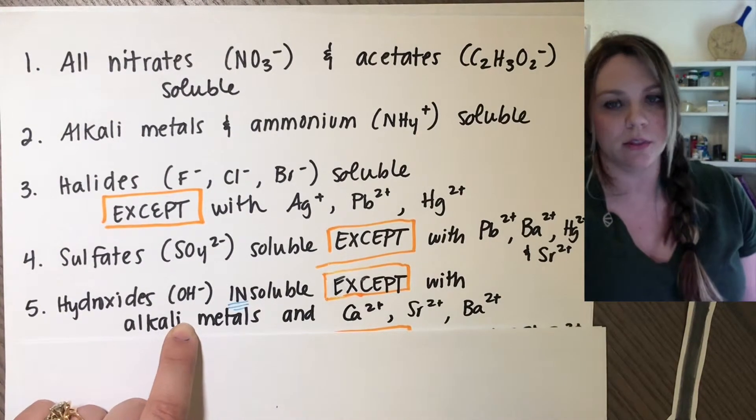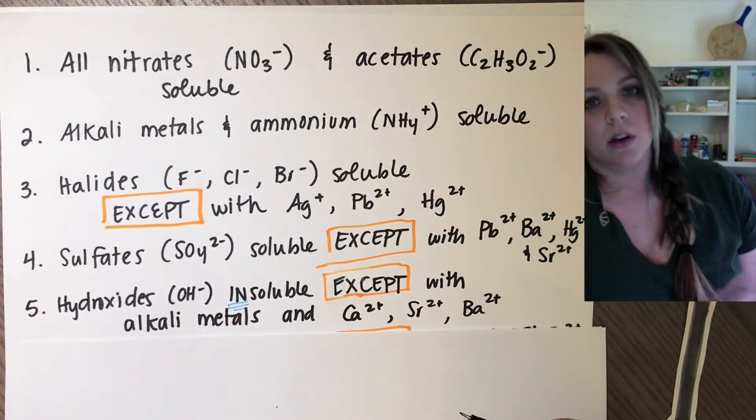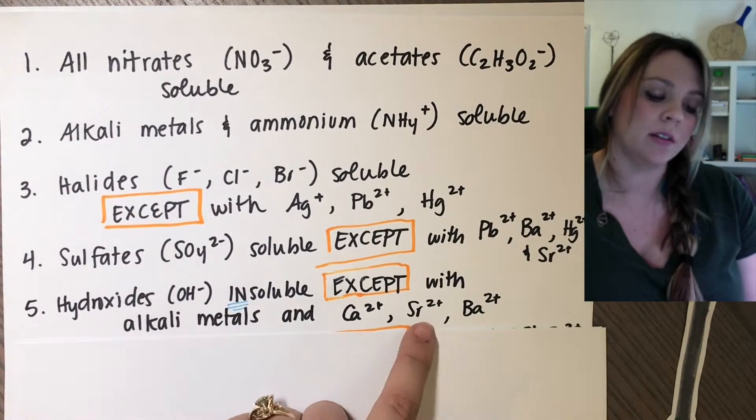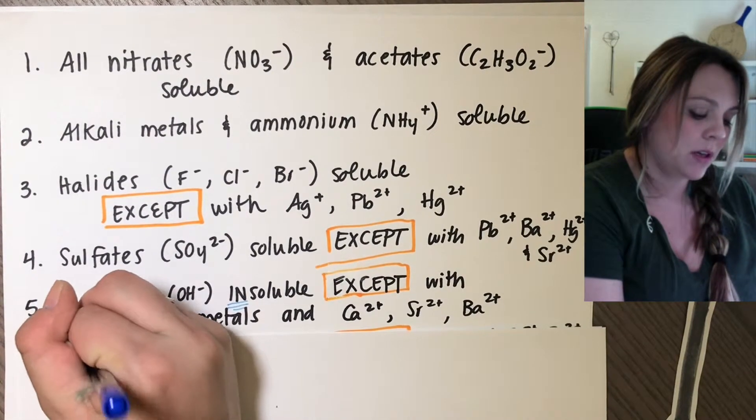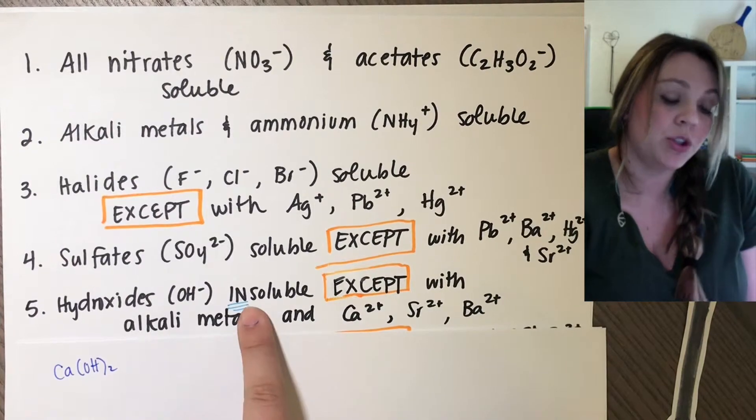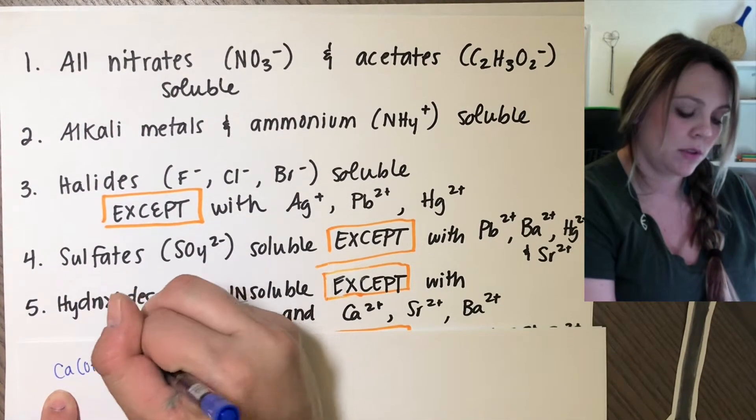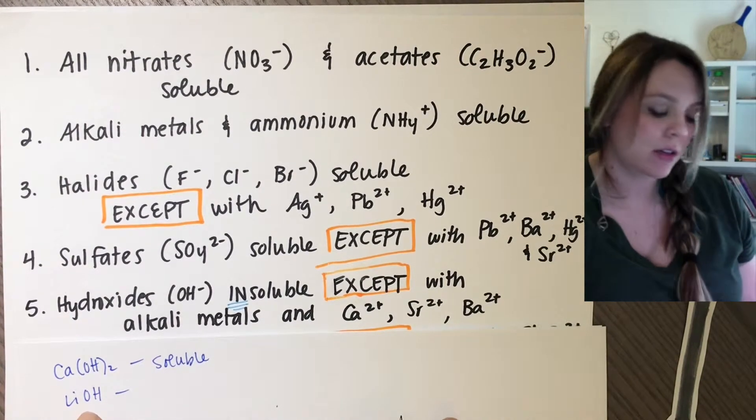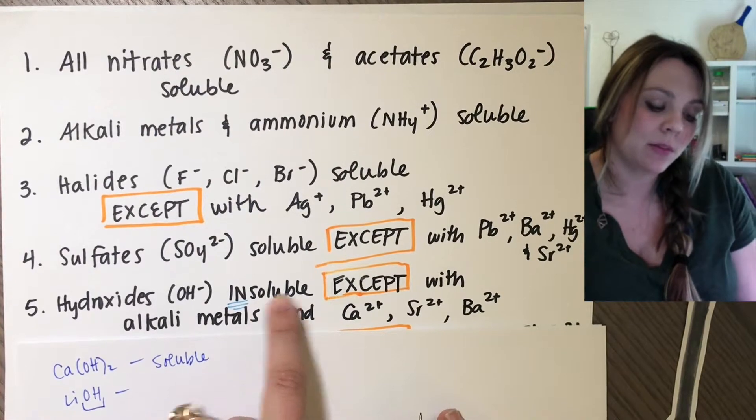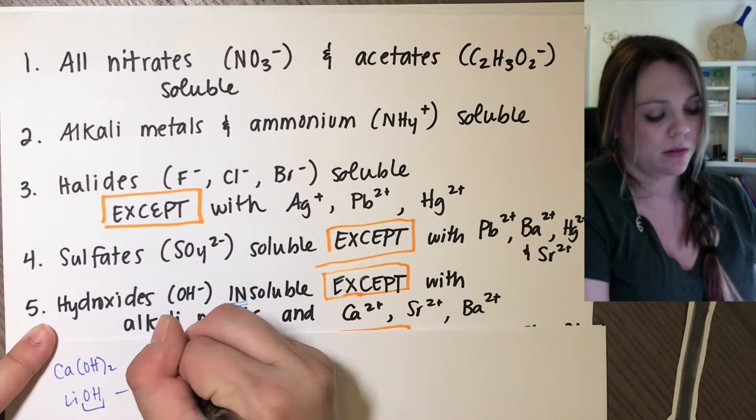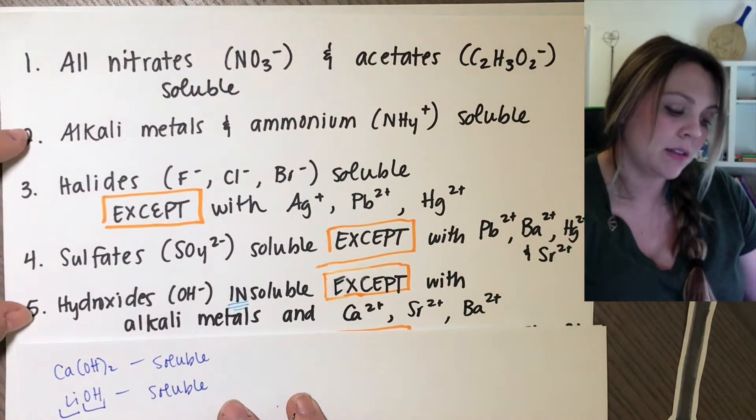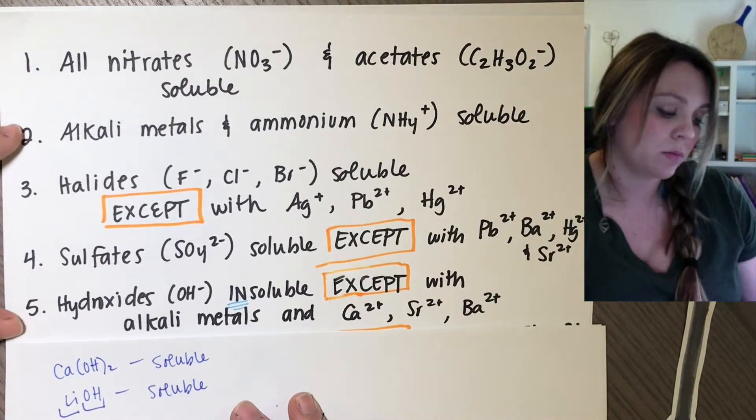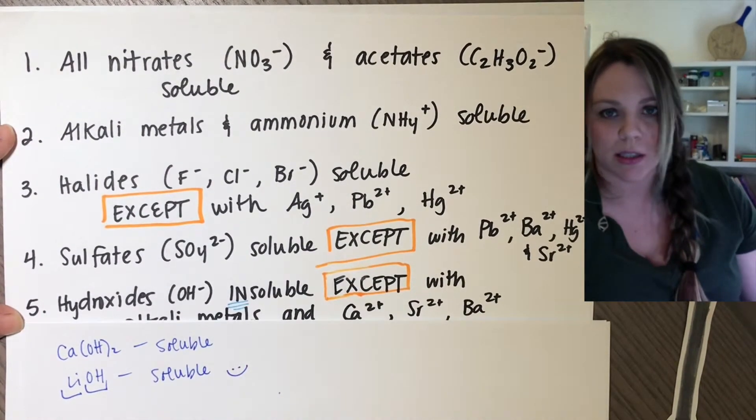Hydroxides. And now from here on, five and down is when we get the things are insoluble unless they're bonded to specific things. So hydroxide, an OH minus, is going to be insoluble unless it's bonded to alkali or calcium, strontium, barium. So calcium hydroxide, it's a hydroxide that should be insoluble, but it's bonded to calcium, so this is soluble. If I had lithium hydroxide, hydroxides are insoluble. However, it's bonded to an alkali metal, so this is soluble. And you'll notice these guys coincide with each other. Hydroxides are insoluble unless it's bonded to an alkali metal. Alkali metals are soluble. So rules two and five go together. They complement each other. They're not contradicting each other. This is good.